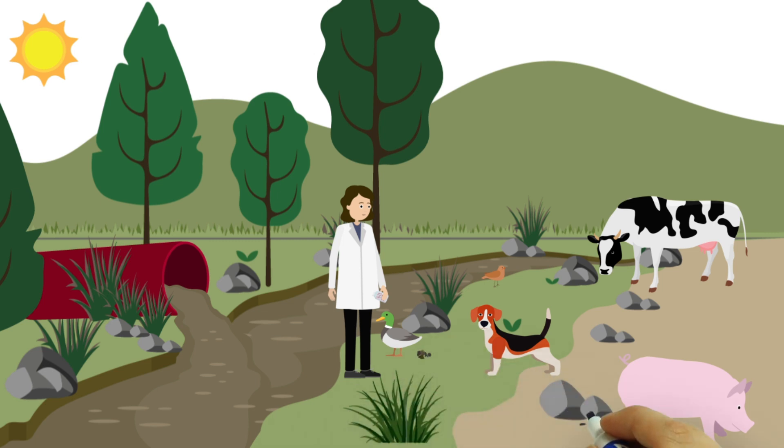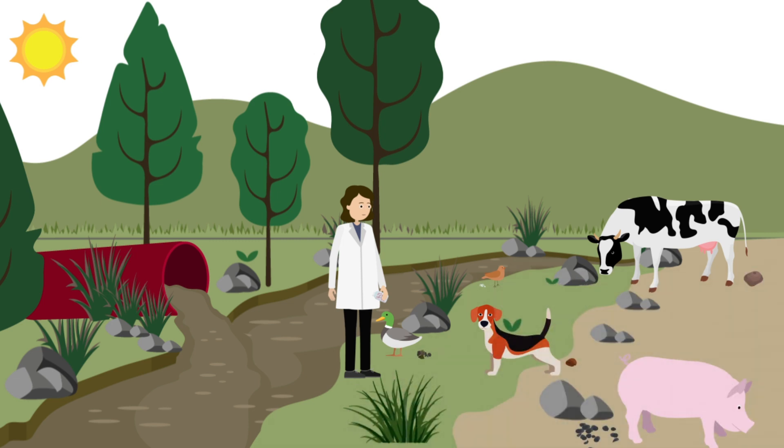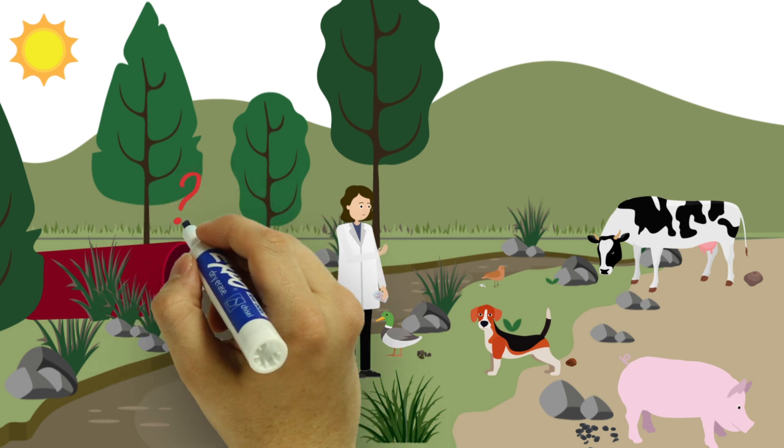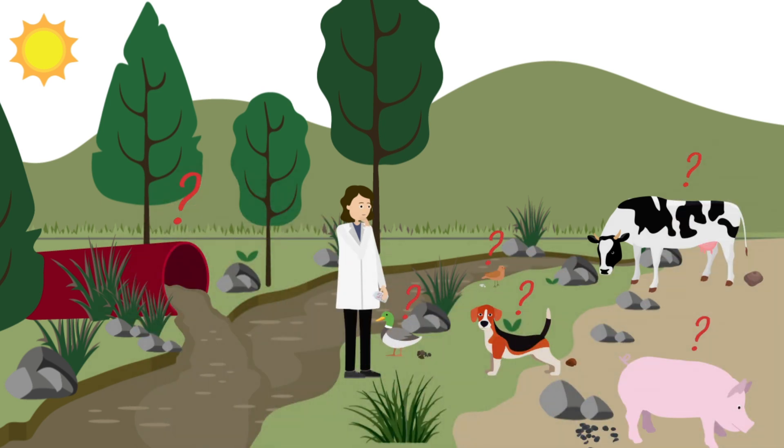The source could be sewage or any animals in the catchment area. Unless the source can be identified, it's virtually impossible to develop a contamination management strategy.